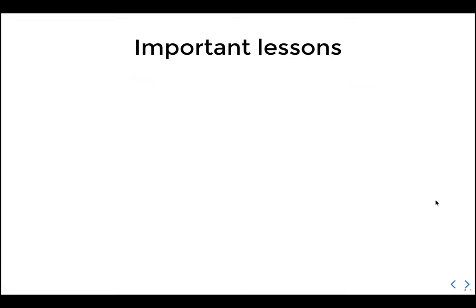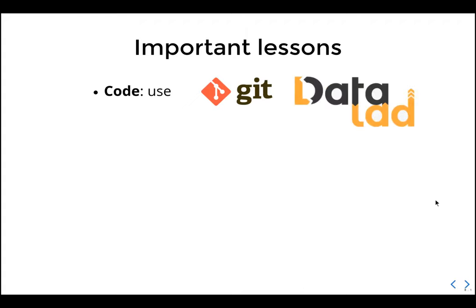Now for important lessons from large-scale analysis. For code: use Git. Even for small scripts — if you don't, you lose access to what you did. Git doesn't mean sharing everything; you can do it privately. Having a tracked history and being able to share it in a structured way is very helpful. DataLad actually takes care of this as well — you can track all your code with DataLad even more easily.